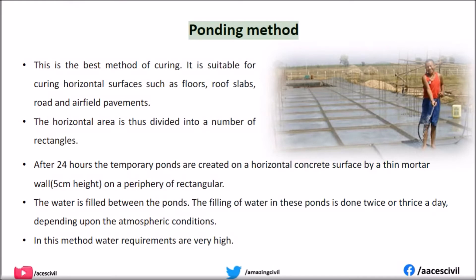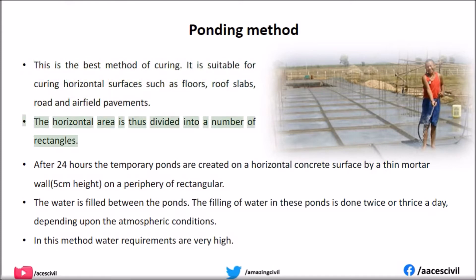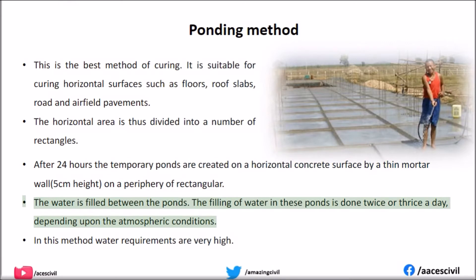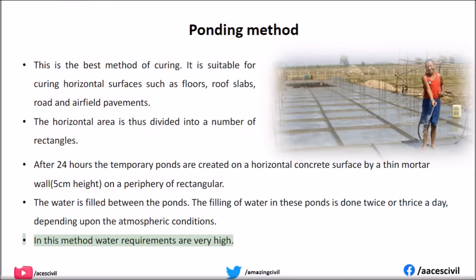Ponding method: This is the best method of curing. It is suitable for curing horizontal surfaces such as floors, roof slabs, roads, and airfield pavements. The horizontal area is divided into a number of rectangles. After 24 hours, temporary ponds are created on the horizontal concrete surface by a thin mortar wall of 5 cm height on the periphery of each rectangle. The water is filled between the ponds. The filling of water in these ponds is done twice or thrice a day depending on atmospheric conditions. In this method, water requirements are very high.